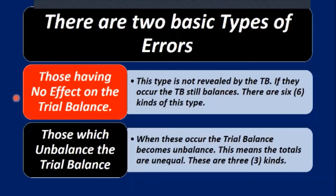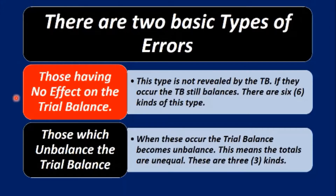Next, those which unbalance the trial balance. When these occur, the trial balance becomes unbalanced — this means the totals are not equal. There are three kinds.